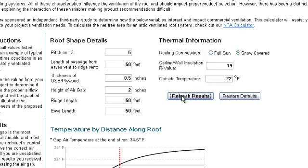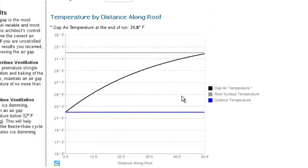We then click Refresh Results. Looking at our new graph, we'll notice that the red line is gone, and that this black line remains below freezing and comfortably between the roof surface temperature and the outdoor temperature.